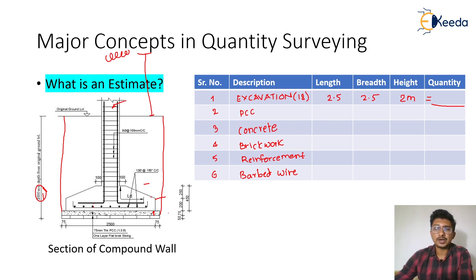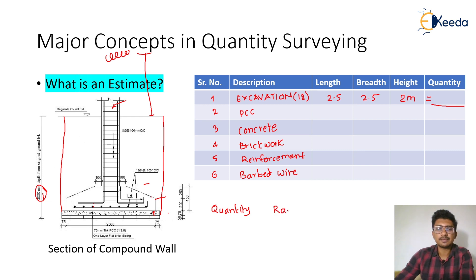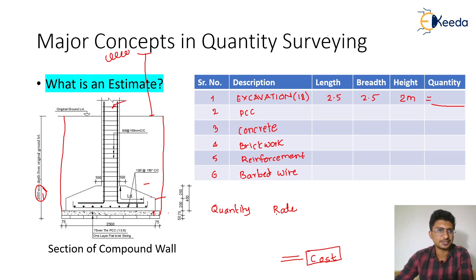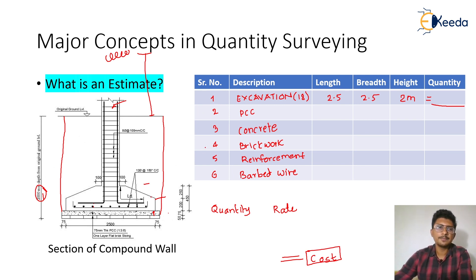Once we have the total quantity for every item, we use another table with the quantity of each item and the rate per unit. Multiplying these gives the total cost of the project — that is the total estimate. Based on this estimate, contracts and tenders are issued. This has been a basic introductory explanation of what an estimate is. Going forward, we will calculate quantities for each item from excavation through to painting, plumbing, and electrical work. I wish you all the best — thank you so much.